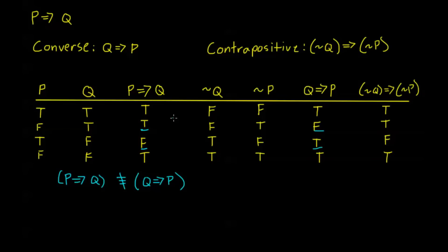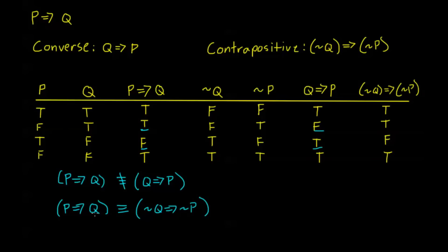The contrapositive, however, is a very interesting case. Notice I have true, true, false, true for P implies Q, and I have true, true, false, true for not Q implies not P. So a contrapositive statement is equivalent to a conditional statement. Figuring out that one is true is the exact same thing as figuring out that the other is true — they're always true at the same time. This is a very useful tool, specifically when we talk about proofs by contraposition: sometimes it's easier to assume that Q is false and show that P is false, rather than assume P is true and show Q is true. So, P implies Q is equivalent to not Q implies not P.